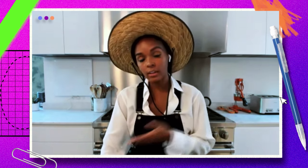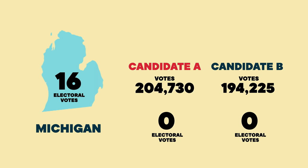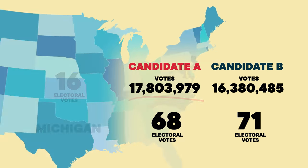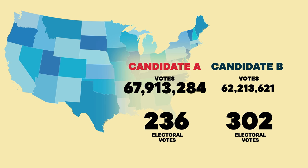The higher a state's population, the more electors they are assigned. So to become president, you need to win a majority — at least 270 of those electoral votes. Even if you only win a slim majority of the popular vote in a state, you usually win all of that state's electoral votes. That's why sometimes a candidate can win fewer people's votes across the country but still be elected president.